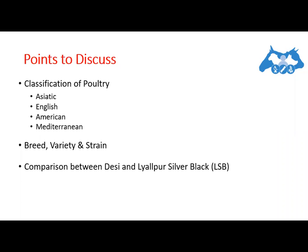Starting with the Asiatic class: they have a heavy body size and the majority of these birds are used for meat purpose. Their eggshell color is brown, earlobe color is red, and skin color is yellow. They have feathers on their shanks. One important distinction is that only the Asiatic class has feathers on the shank — the other three classes do not.